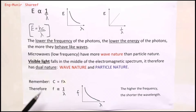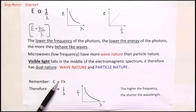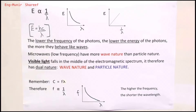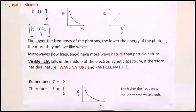One more graph to consider is frequency versus wavelength. From the wave equation, the speed of electromagnetic waves equals frequency times wavelength. The higher the frequency, the lower the wavelength, and vice versa, because both must always multiply to give 3 times 10 to the 8 meters per second. So frequency is inversely proportional to wavelength. If asked to draw frequency versus 1/wavelength, that would be a straight line graph through the origin.